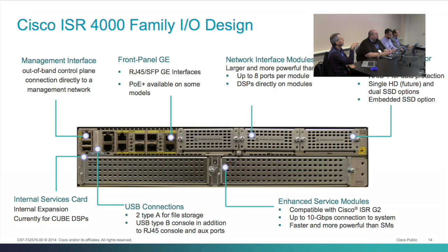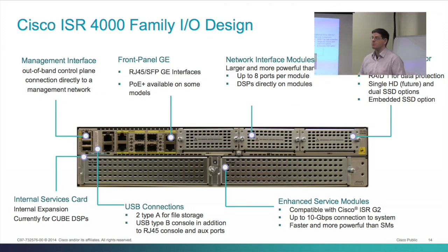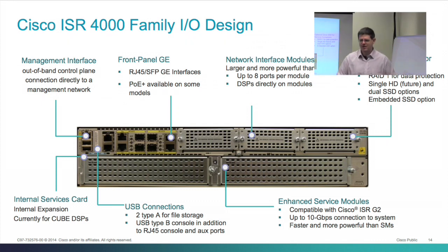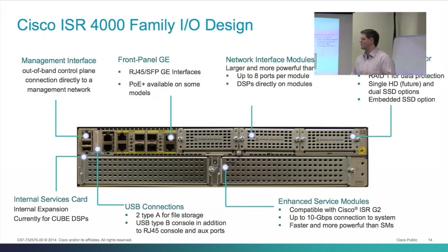The management interface resides on its own VRF, just like on the ASR 1000 — same architecture. You physically can't forward through it because there is no punt path. Some customers are interested in using the management interface on a DSL or cable connection as an emergency management path for their branch, rather than using an analog dial-up modem to connect to an aux port. Copying a large IOS XE file over a modem is not something you'd ever want to do, but doing it over a 10-meg cable modem connection wouldn't be a big deal.